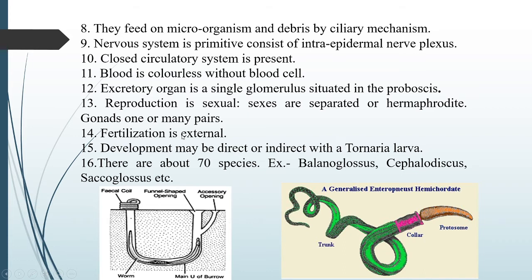The excretory organ in Hemichordates is a single glomerulus situated in the proboscis region. This excretory organ is confined only to the proboscis region and exists as a single glomerulus.